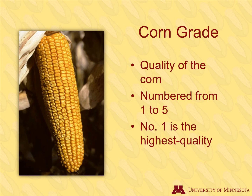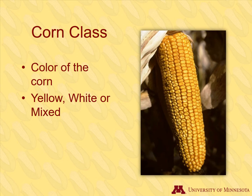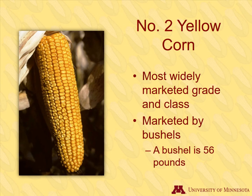Dent corn can be further broken down by grade. The grade of corn is based on its quality, indicated by a number ranging from 1 to 5. The lower the number, the better the grade and the higher the price. Grades are based on test weight, density, broken or damaged kernels, and foreign material. Broken and damaged kernels are particularly bad for corn that will be used for food products. There are three classes of corn: yellow, white, or mixed. White corn tends to be lower yielding compared to yellow. When prices for corn are given in the news, they are usually based on number 2 yellow dent, the most widely marketed grade and class. Corn is marketed by bushel weight, and one bushel of corn weighs 56 pounds.